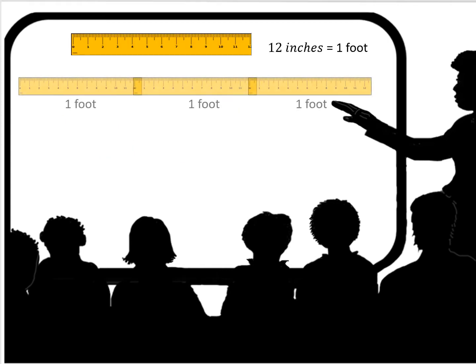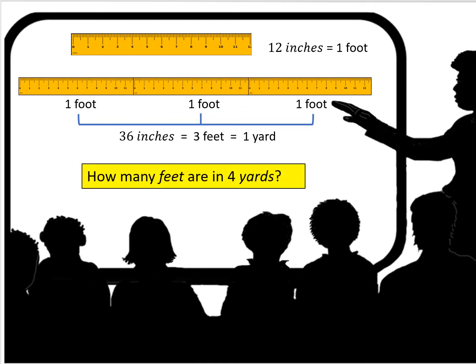12 inches is equal to one foot. That's a typical ruler. And we know that three rulers, or three feet, is equal to one yard. We could therefore say that three times 12 inches would be 36 inches. 36 inches is equal to three feet, which is equal to one yard.